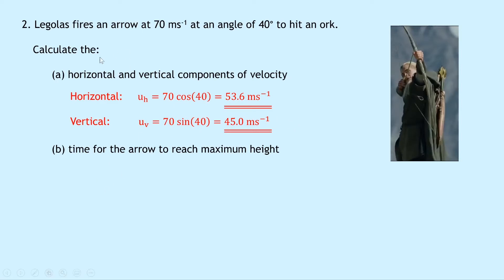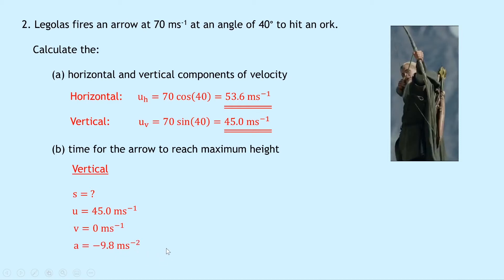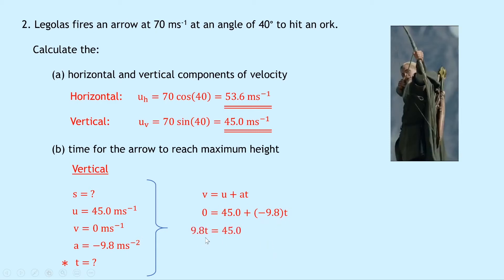Part b says calculate the time for the arrow to reach maximum height. At maximum height the final vertical velocity is 0 meters per second. Using suvat for vertical motion: u is 45.0 meters per second; v is 0; a is minus 9.8 meters per second squared; and t is what we're finding. Using v equals u plus at: 0 equals 45.0 plus (minus 9.8)t, so 9.8t equals 45.0, giving t equals 4.6 seconds.